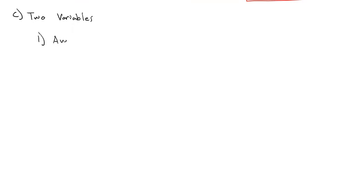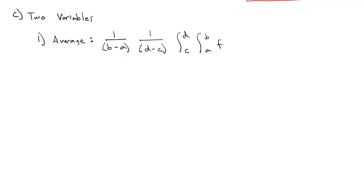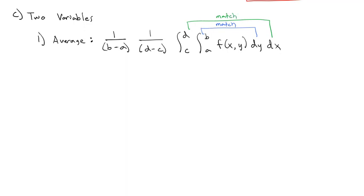The way we calculate an average with two variables is we don't just divide by the number of things in the x direction — we also have to divide by the number of things in the y direction. We end up with 1 over b minus a times 1 over d minus c, times the integral from c to d of the integral from a to b of f of x, y dy dx. We could switch this to dx dy — what is important is that the limits for dy must match how y is changing, and the limits for dx must match how x is changing. If you switch the order, you also have to switch the limits of integration.